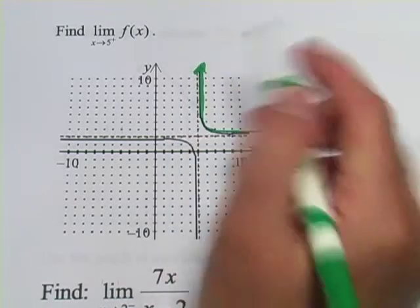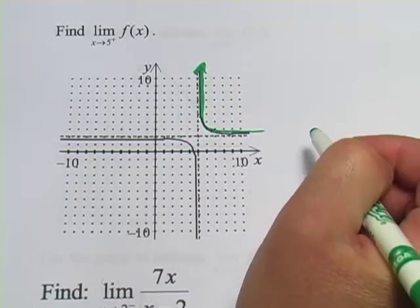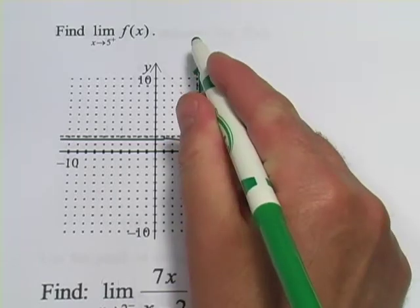And presumably, way up there at 5, you're going to be way up at infinity. So, if it goes shooting straight up like that, that's positive infinity.